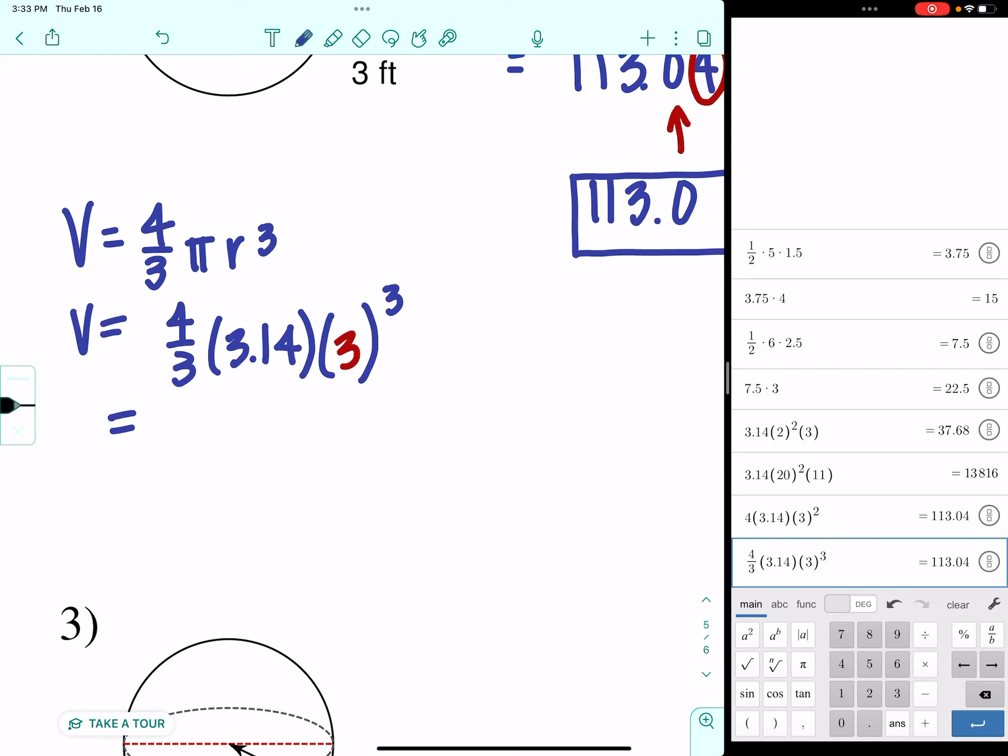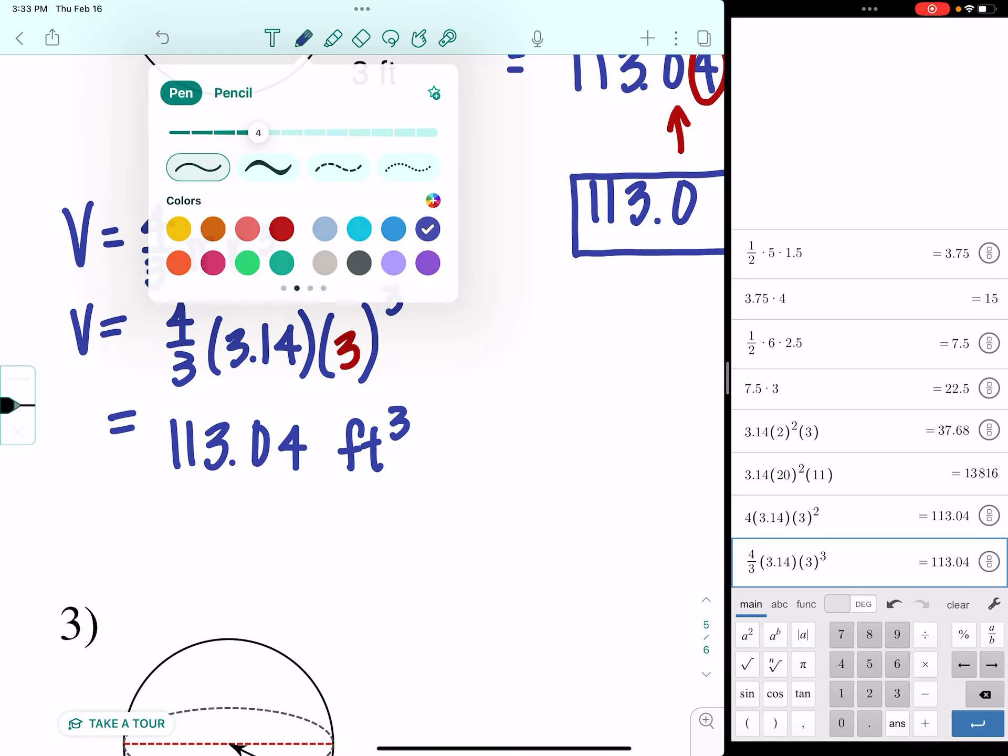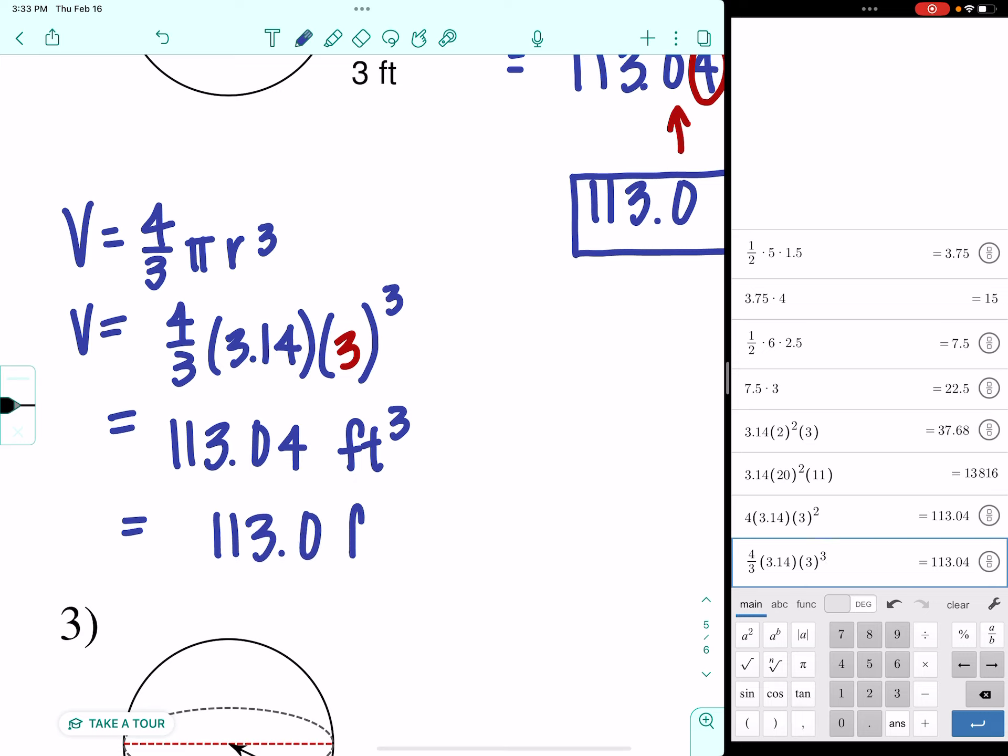So, I get 113.04 cubic feet. Now, we've already rounded this, so we're not going to go through that whole spiel again. When we round it, we end up with 113.0 feet cubed.